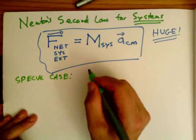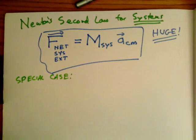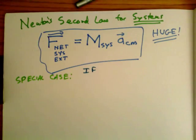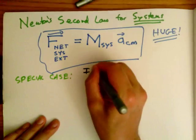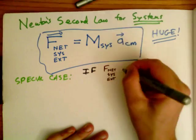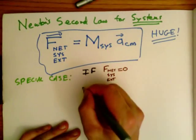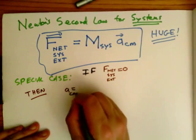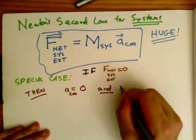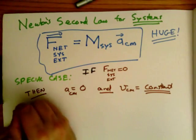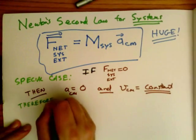So in the special case, if it is the case that the net force on the system, the external force, is equal to zero, then intuitively the acceleration of the center of mass is zero, therefore the velocity of the center of mass must be constant. So no net force means constant velocity of the center of mass.